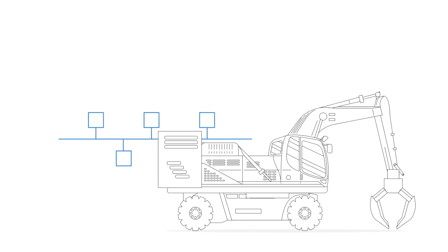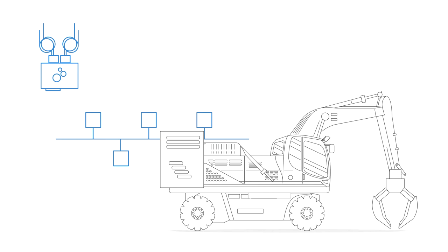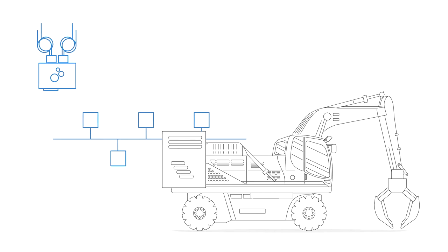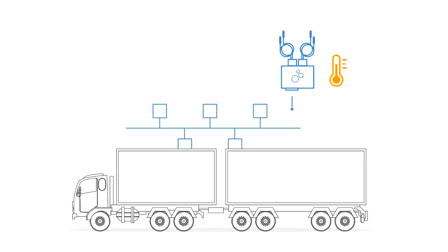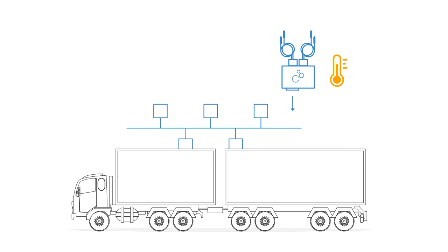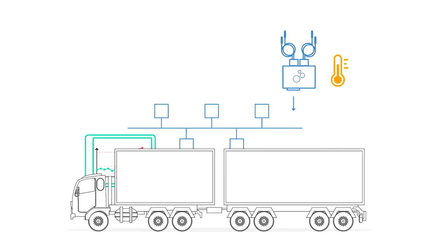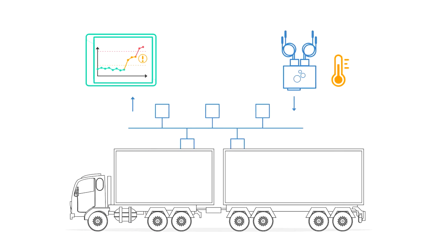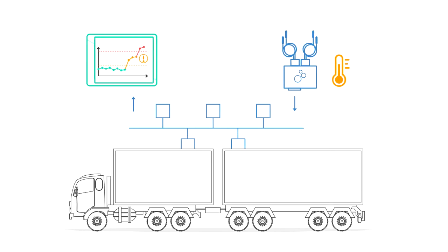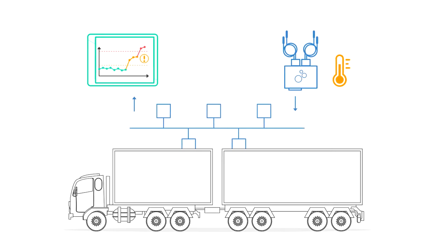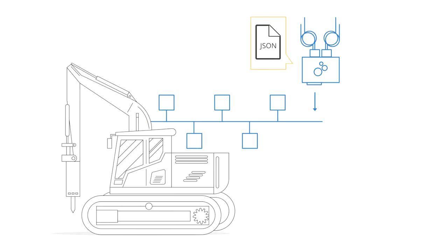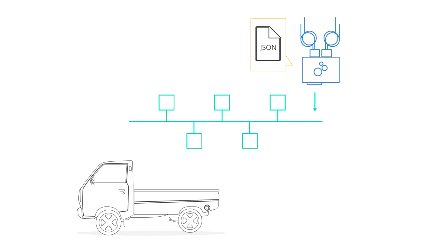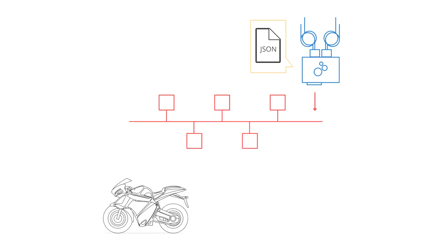To understand how the temperature-to-CAN module can be used in practice, let's look at two types of use cases. First, the module can be integrated as a standalone device for injecting sensor data directly into the CAN-BUS of a vehicle or machine. The sensor data can be consumed by other CAN nodes on the network, for example, ECUs, cabin displays, CAN loggers, or telematics control units. To ensure compatibility, you can easily modify the CAN bitrate and CAN-IDs via the configuration editor.